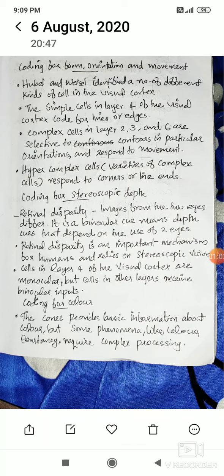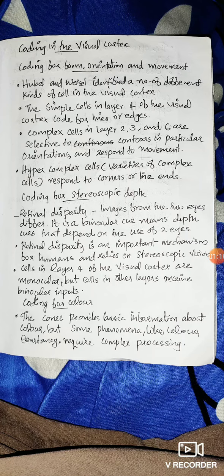If you have any questions about coding for form, orientation, and motion, you can ask complex cells in layers 2, 3, 4, and 2, 3, 6. Then simple cells in layer 4. This is V1. In V1, form, orientation, and motion — the first item is V1.